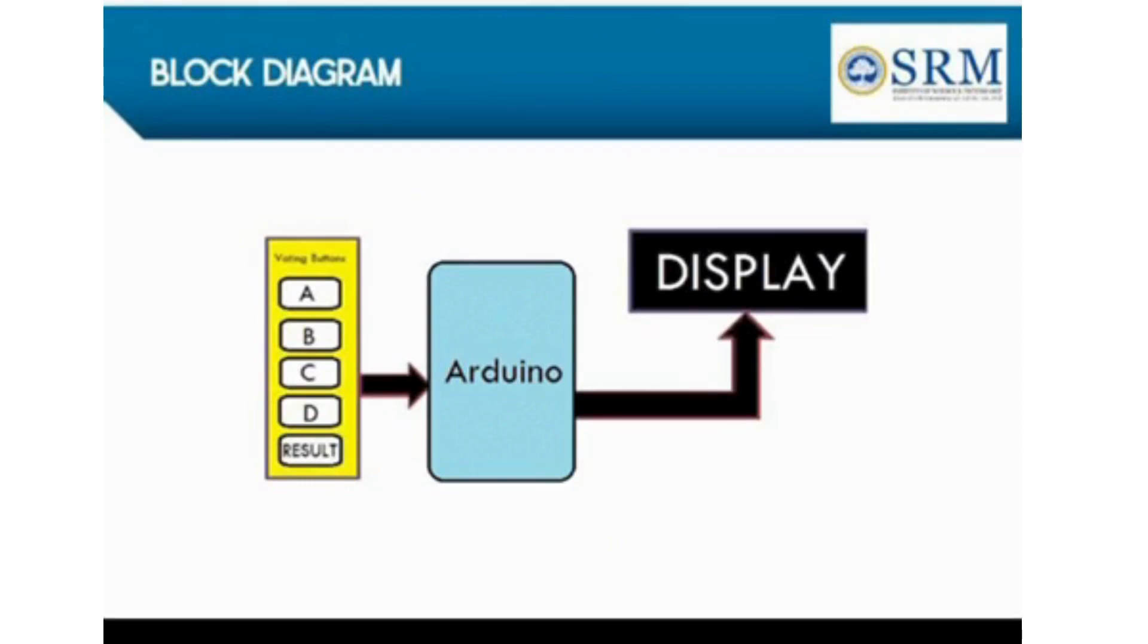Our block diagram: voting buttons are A, B, C, D, and then result. EVM records the vote electronically and stores it in Arduino Uno. Arduino Uno sends the result to the display, and the display shows the result.